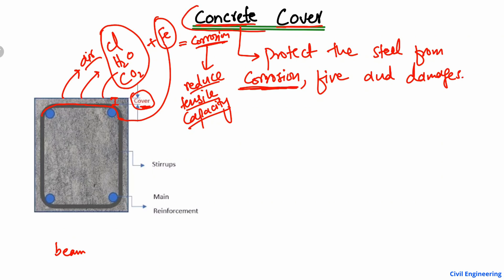When the tensile capacity is reduced, the whole structural member is weakened and cannot take any load. That is why it is important to provide sufficient concrete cover, so that load can be completely transferred from the concrete to the reinforcement bar.